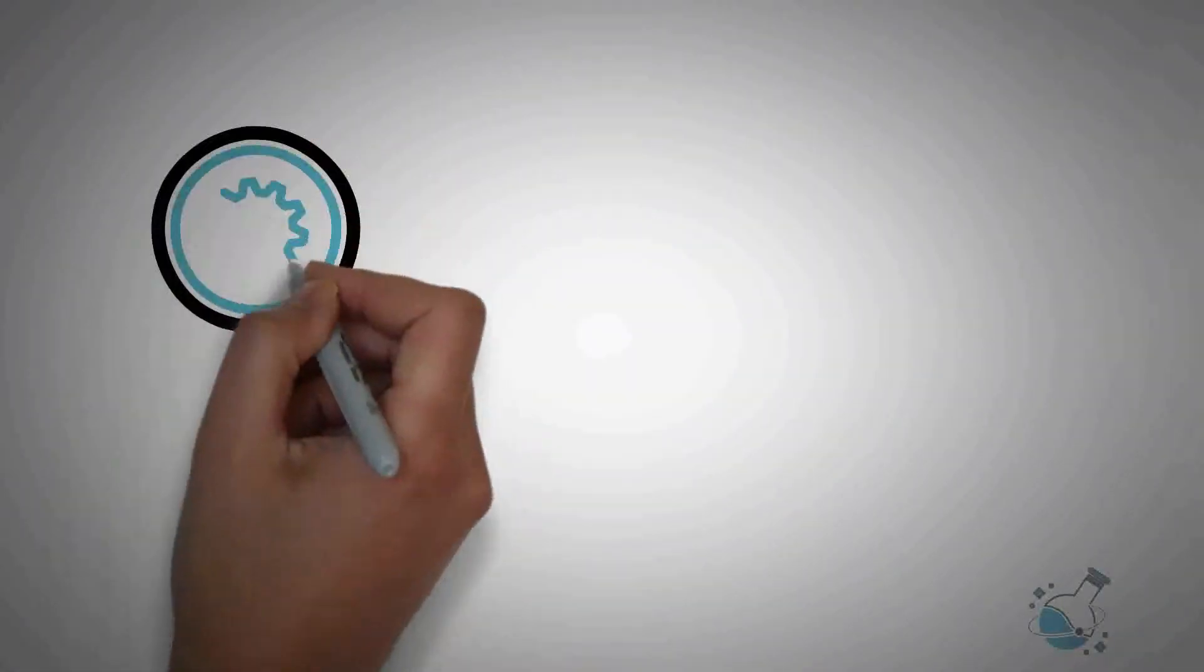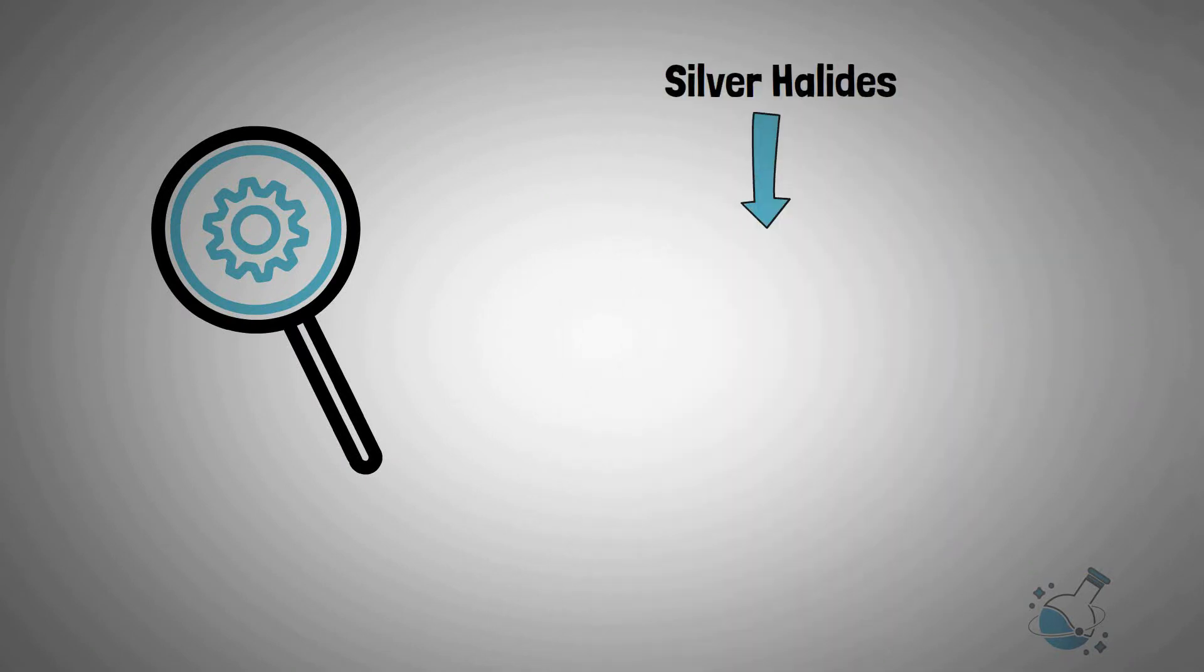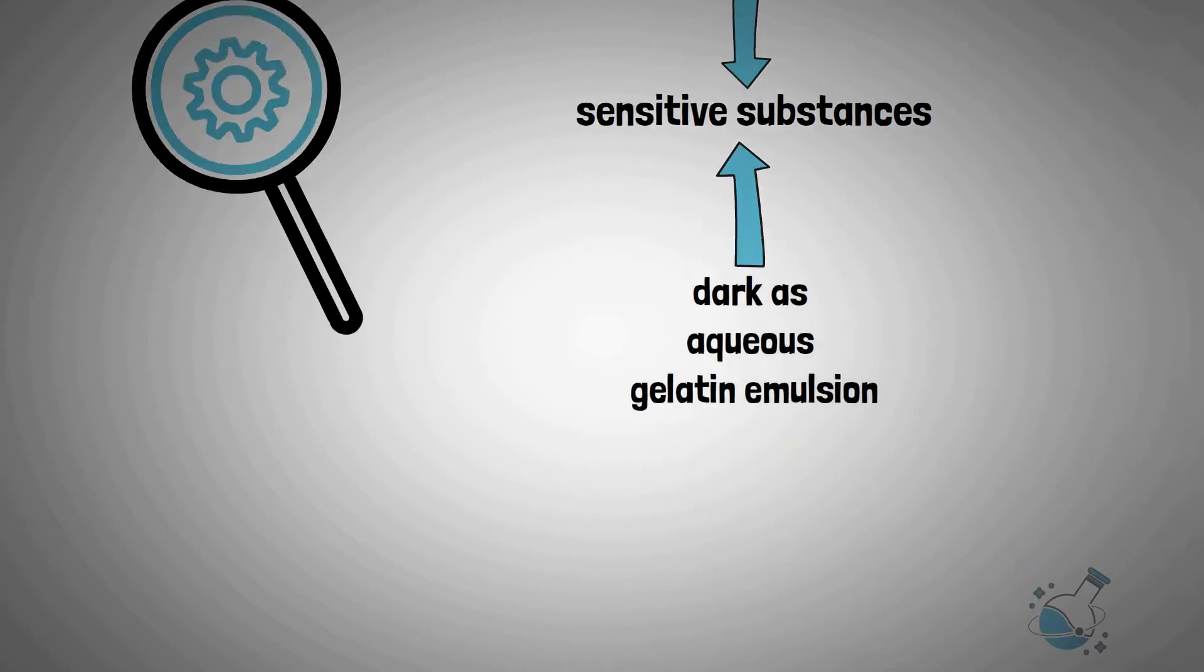Now it is time we looked at the photographic process. Silver halides are the most widely used sensitive substances in photographic processes. These light-sensitive silver salts are prepared in the dark as aqueous gelatin emulsion.